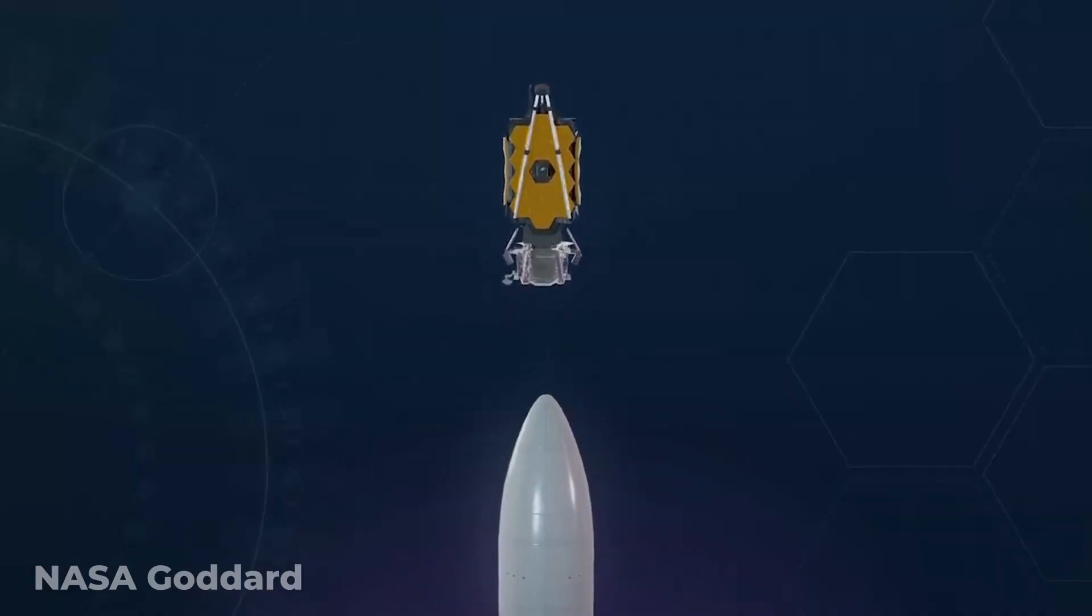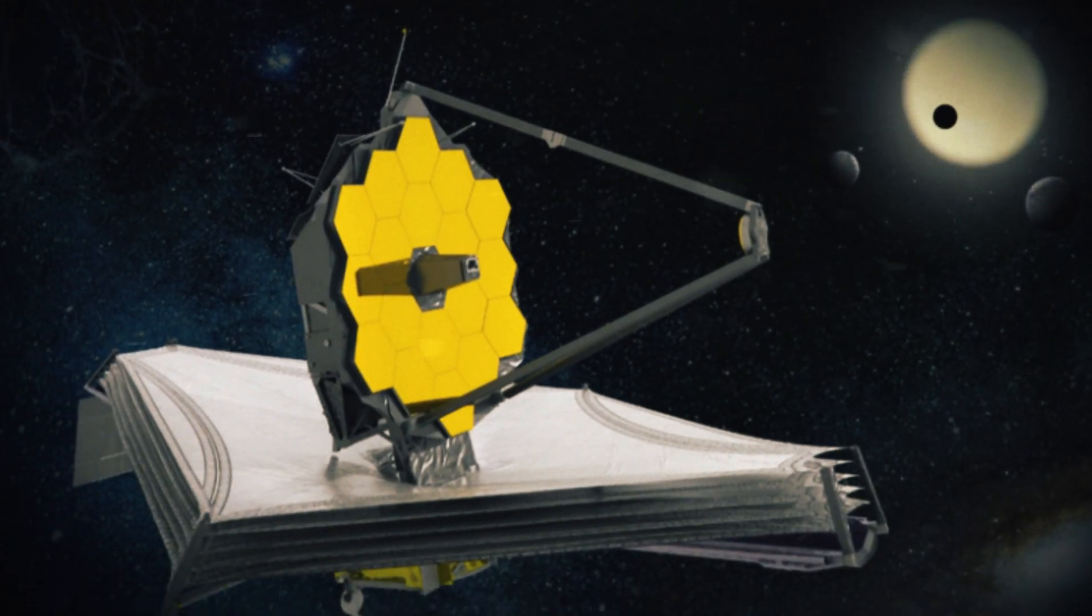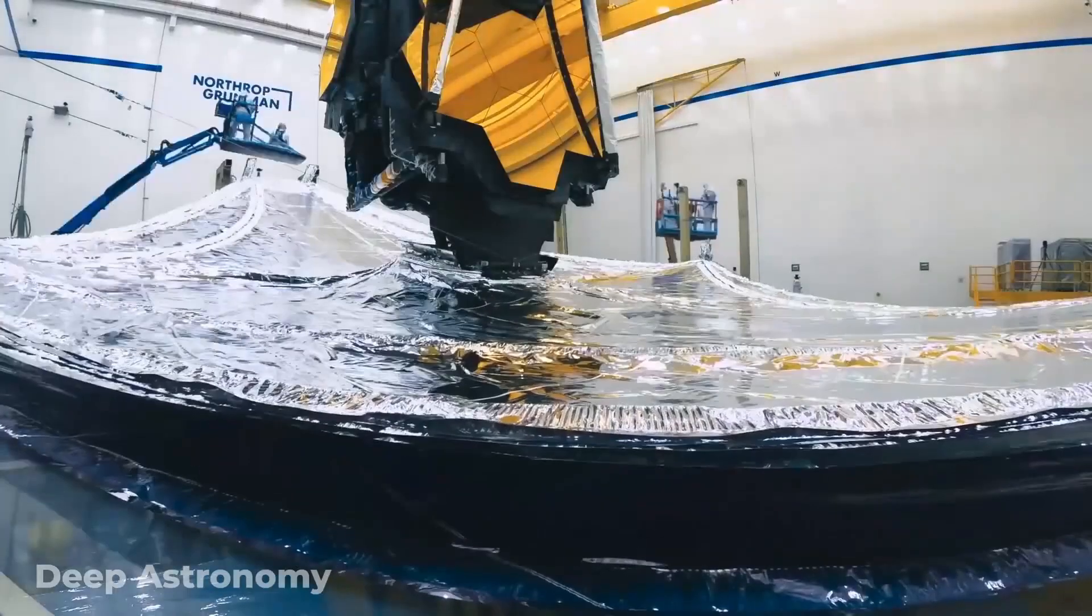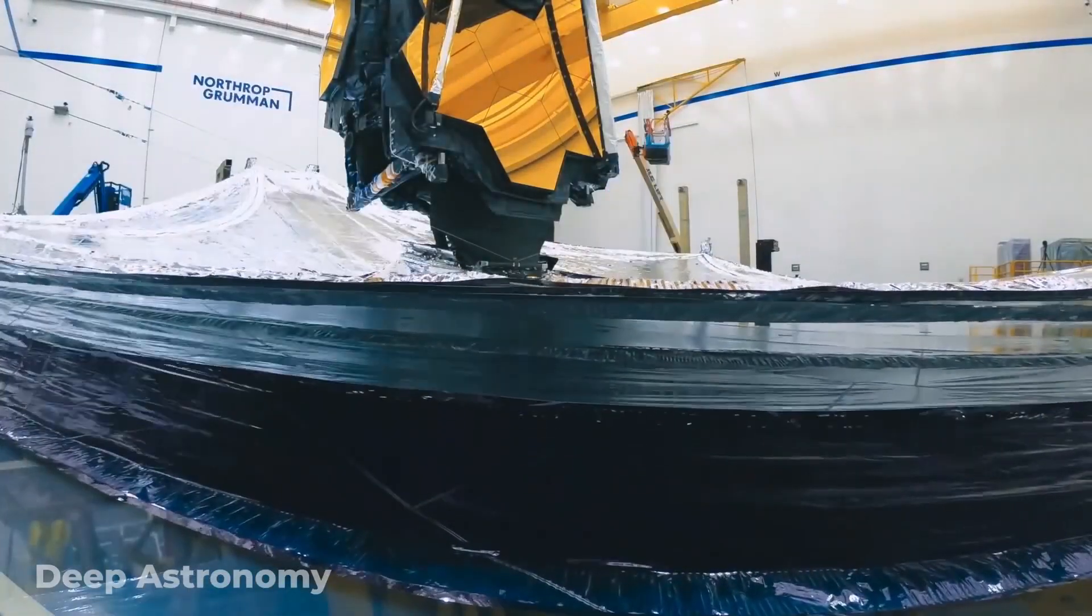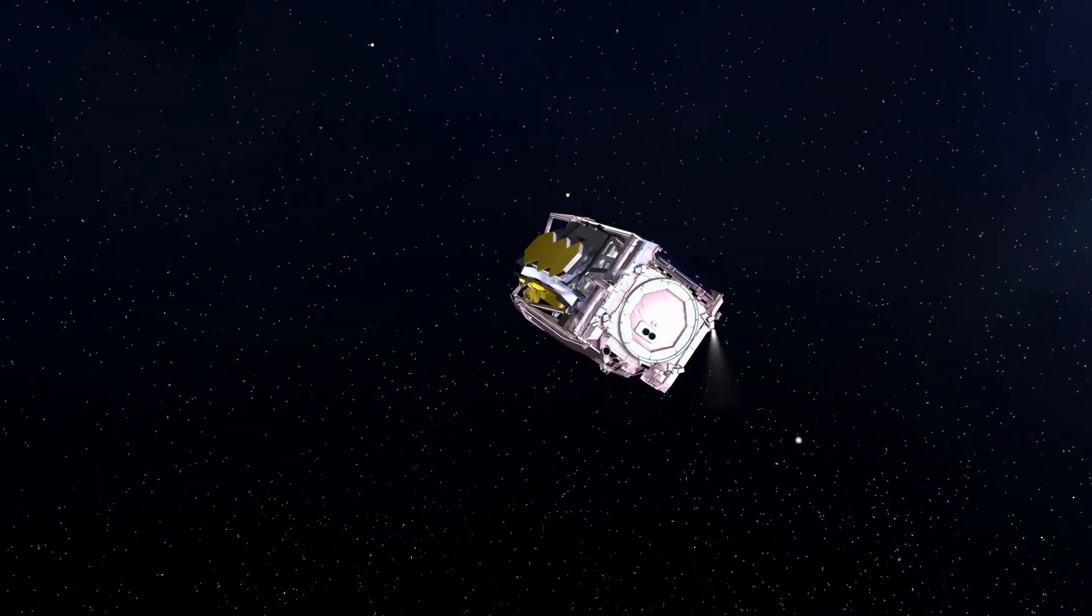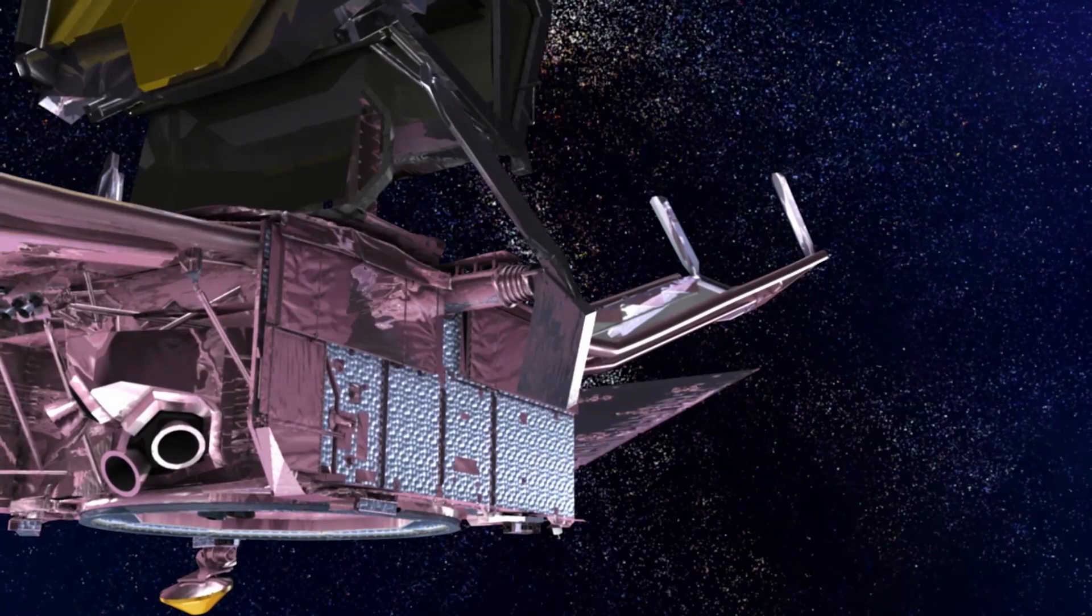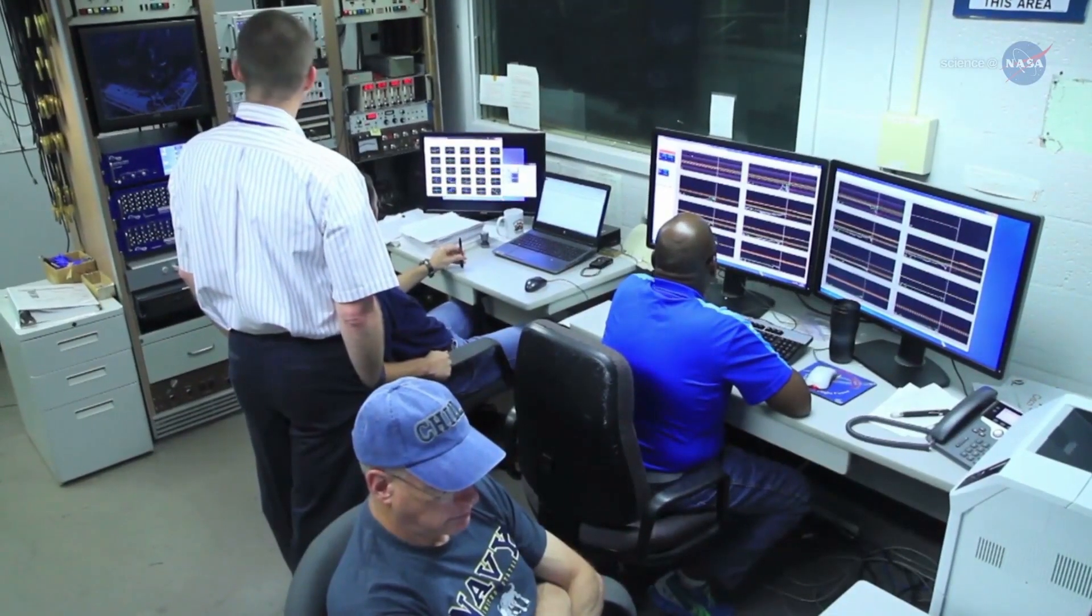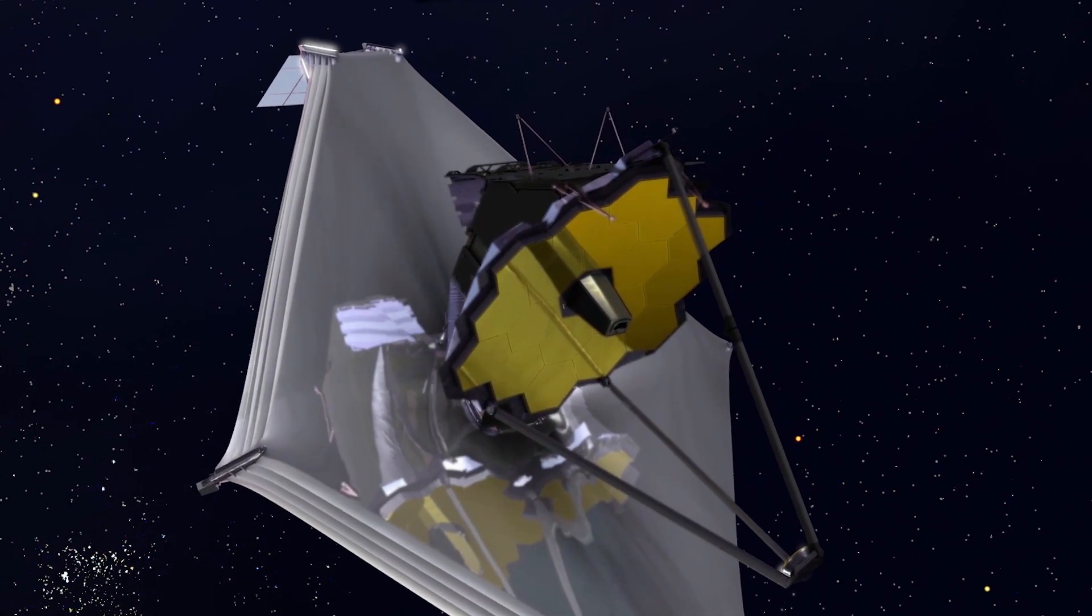Plus, there are even more moving pieces to take into account. Webb also uses a multi-layered parasol to protect its delicate equipment from the sun. The sunshade is the size of a tennis court and rolls up into folds for launch. But now that the telescope is in space, it must unfurl in exactly the correct way, or else it will be completely useless and the project won't be able to achieve its goals.